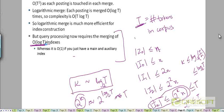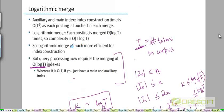As an exercise, try to argue why this logarithmic merge scheme is more efficient than the earlier auxiliary-and-main-index scheme, by analyzing the time complexity of index construction using Big O notation.